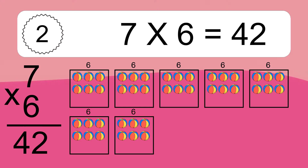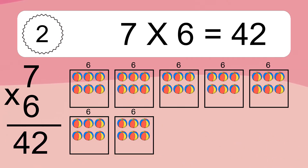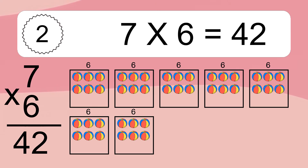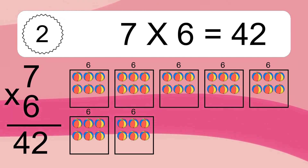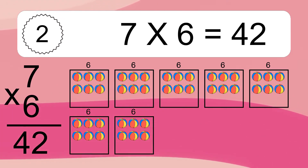We have 7 boxes, and each box has 6 colorful balls inside. If you count all the balls in all the boxes together, you will have 7 times 6 balls. This equals 42 balls.